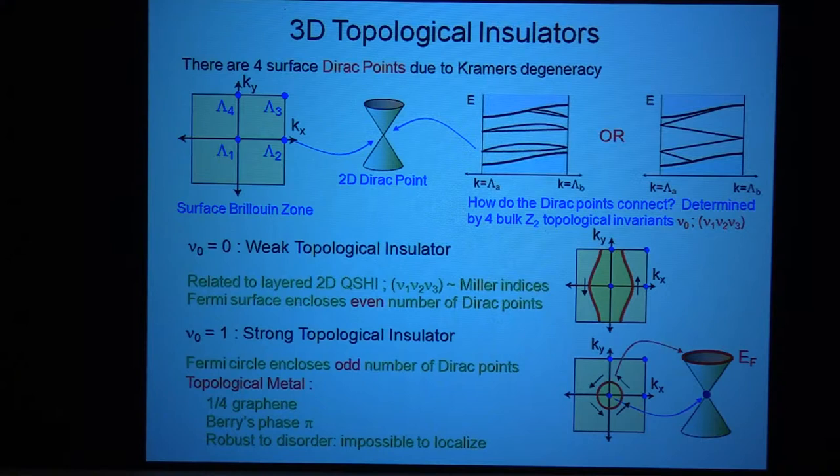Now, for a two-dimensional surface, there are four of these special points. And at each of these special points, I have to have this Kramers degeneracy. If I move away from these points, then again, in general, a spin-orbit interaction will lift the degeneracy.